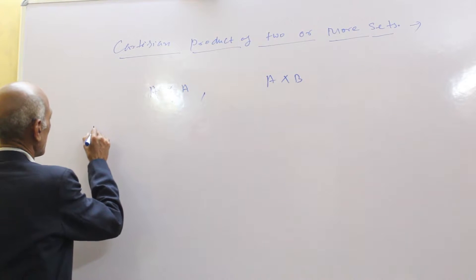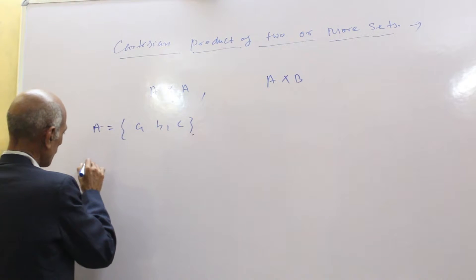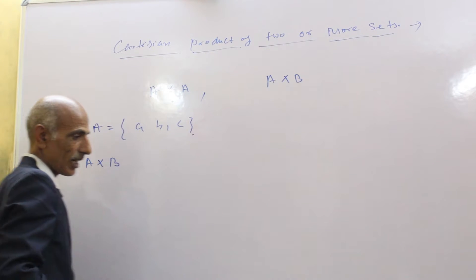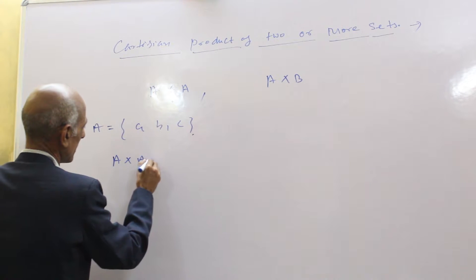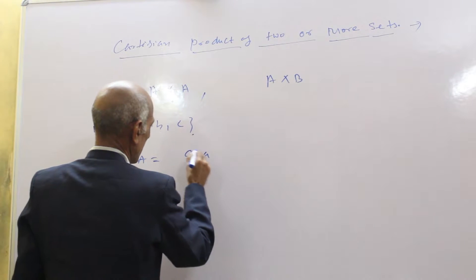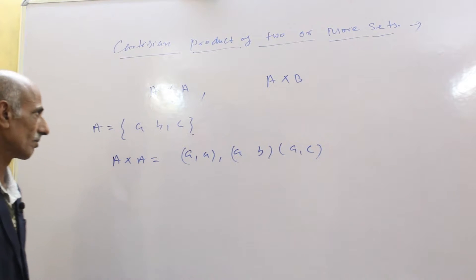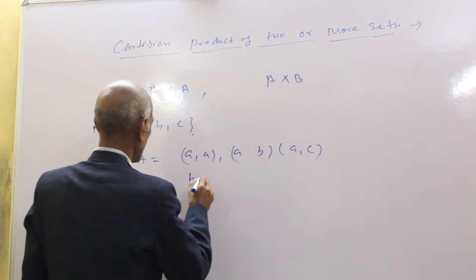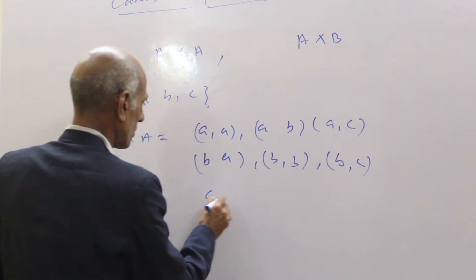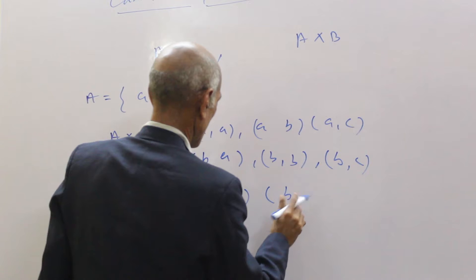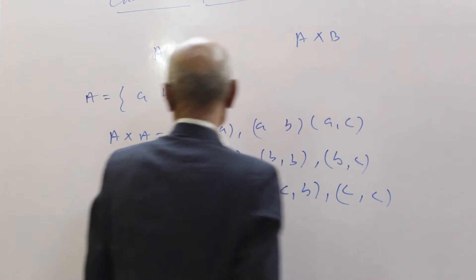Let A be a set with elements a, b, c. If we find the Cartesian product A × A, we write it as: (a,a), (a,b), (a,c), then (b,a), (b,b), (b,c), and (c,a), (c,b), (c,c). This is the Cartesian product A × A.